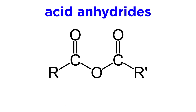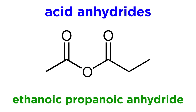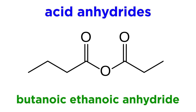Next we can look at acid anhydrides. These are functional groups in which there are two carbonyls with an oxygen atom between them, and alkyl on either side. Here we can simply name the two alkyl groups, list them in alphabetical order, and then finish with the word anhydride. So this would be ethanoic propanoic anhydride. This would be butanoic ethanoic anhydride, and so forth.